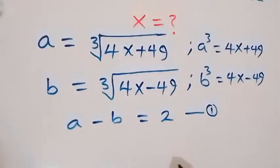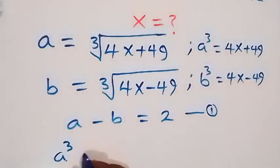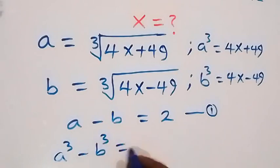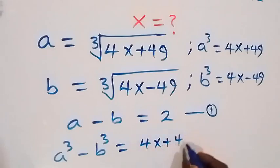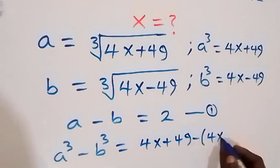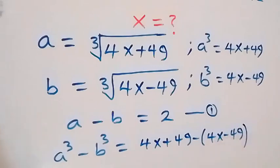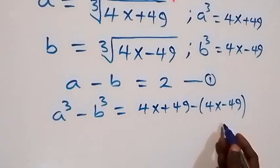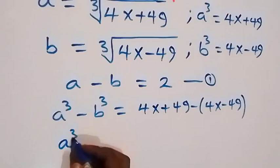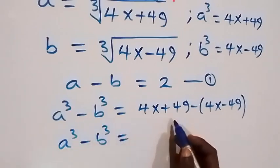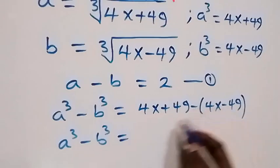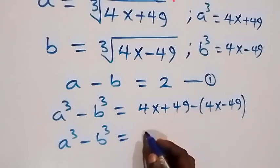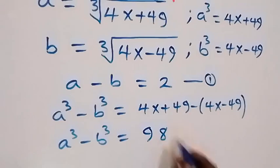Once we can get A plus B, we will be able to solve together with equation 1. Now from what we have, A cubed minus B cubed equals (4x plus 49) minus (4x minus 49). When we expand, 4x minus 4x cancels out, and we have minus and minus gives plus, so 49 plus 49 gives us 98. So A cubed minus B cubed equals 98.